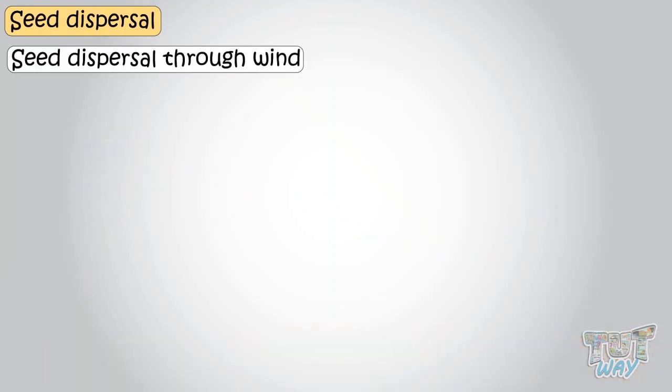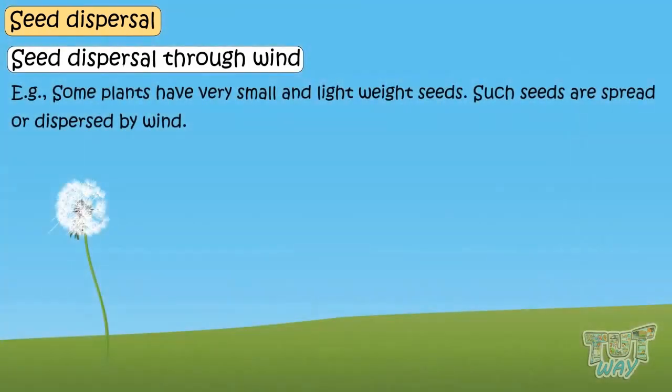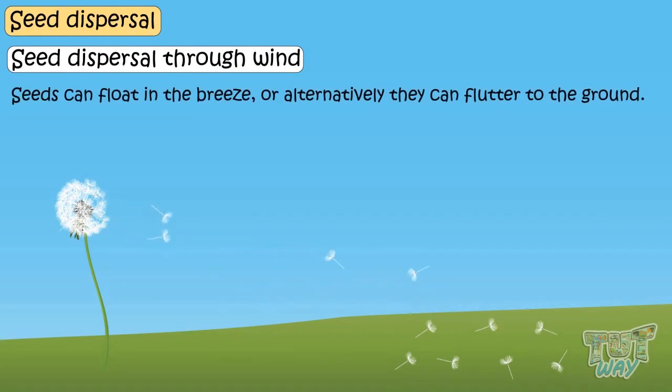Wind. Some plants have very small and lightweight seeds. Such seeds are spread or dispersed by wind. Small and light seeds fly away with wind to distant places. Seeds can float on the breeze or, alternatively, they can flutter to the ground.